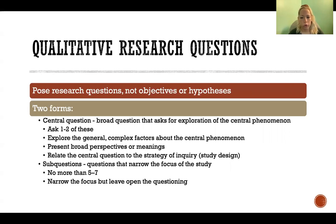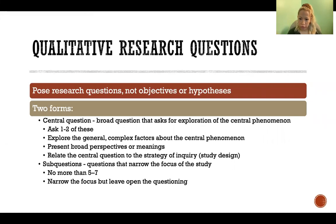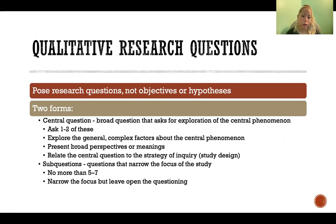Your qualitative research questions can take two forms. You'll have one or two central questions, which are broad questions that are looking for exploration of whatever is the central phenomenon that you're trying to study. These questions are exploring the general phenomenon and complex factors about that phenomenon. Then, if you want to, you can include sub-questions that will narrow down each of those central questions. That is not necessary.